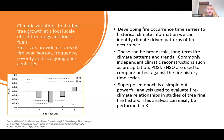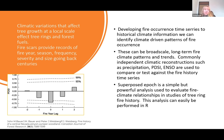Going on to fire — we go back in time, we create this great fire history. We know over the past 400 years every 16 years there was a fire, or we have every year that a fire occurred in the region for the last 400 years. We want to figure out what climate may have been driving the fires. Climate variations that affect tree growth at the local scale affect the tree rings and forest fuels. Fire scars provide the record of fire year, season, frequency, severity, and size going back centuries.